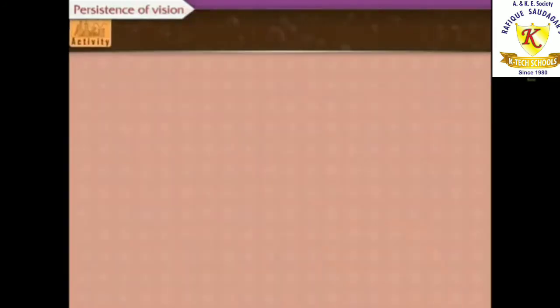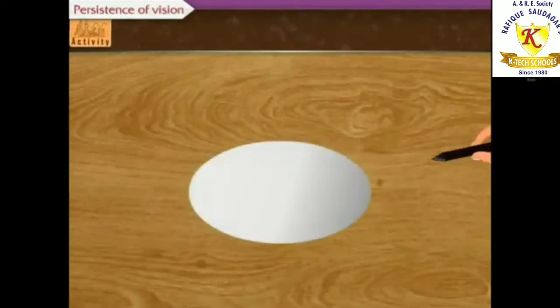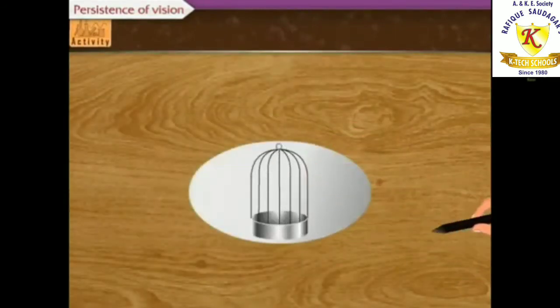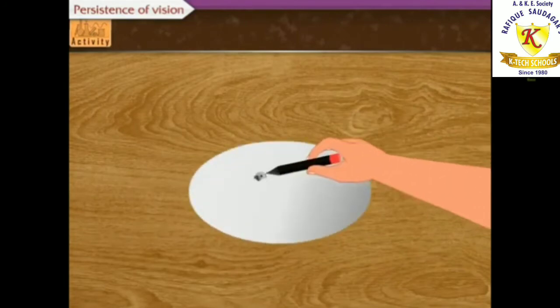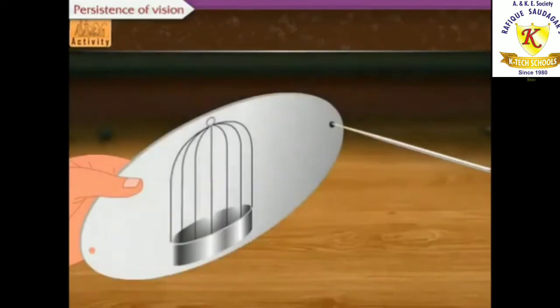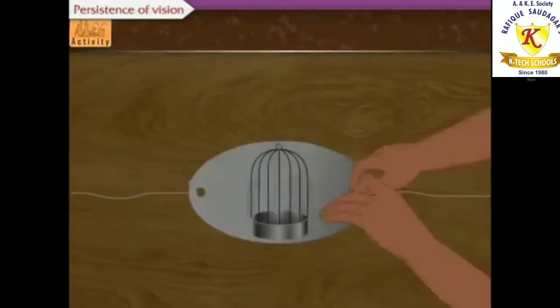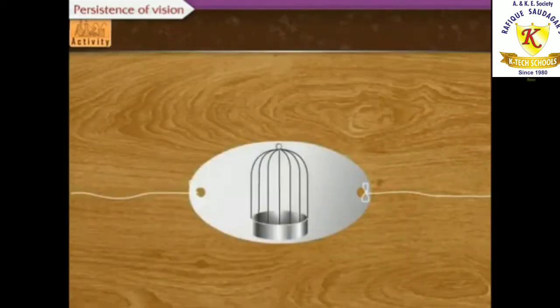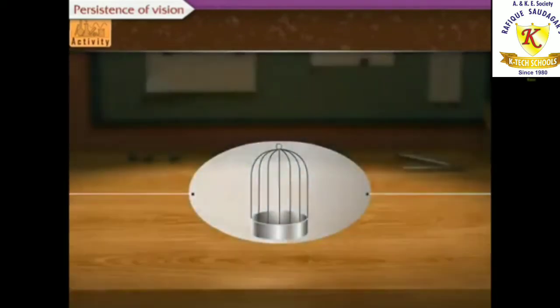Now, let's do a second experiment. Draw a cage on one side of a cardboard. On the other side of that cardboard, draw a bird. Make a hole on both the sides of that cardboard and tie a thread and hang the cardboard with the help of the thread. Now, twist the thread and leave it. What do we observe here?